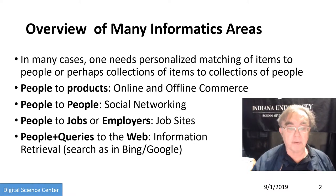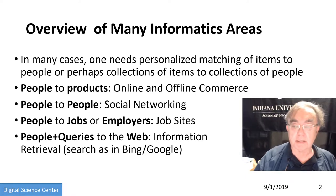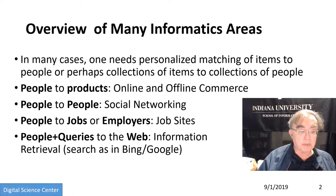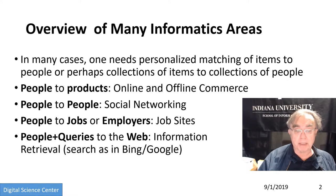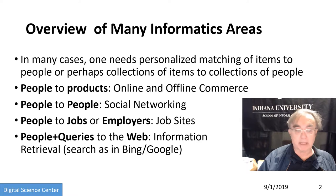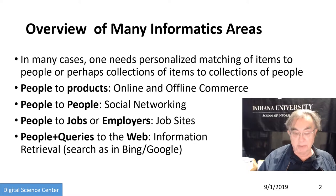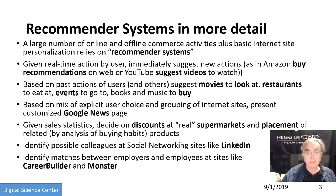All of these are effectively recommendations. You're given an initial query, whether it's the name of a person or the name of a product, and you want to find related things in another space — the space of things to buy, the space of people to know, the space of jobs to apply to, and so on. So that's recommender systems — they're a key technology.